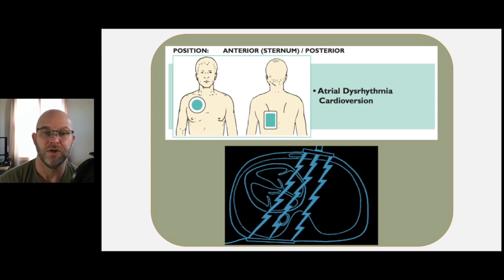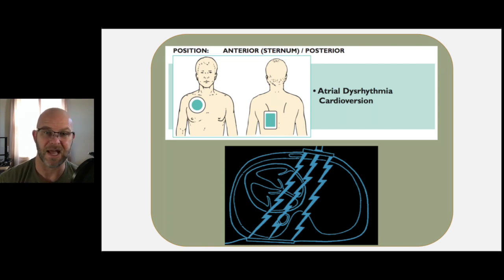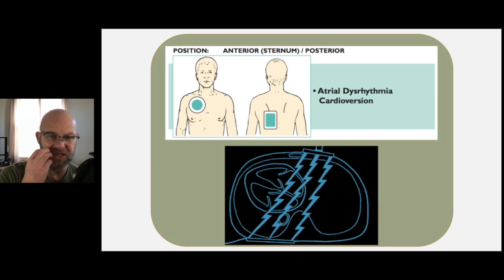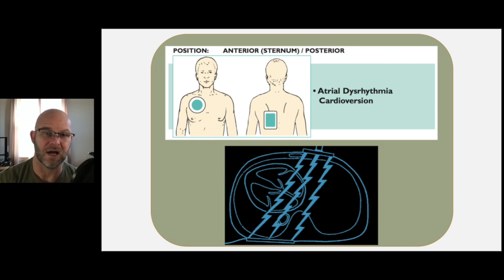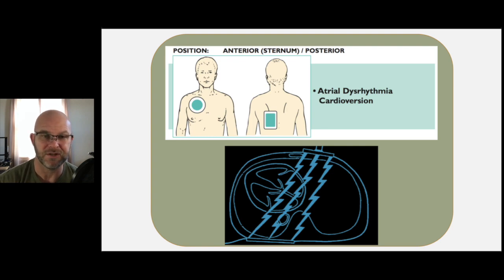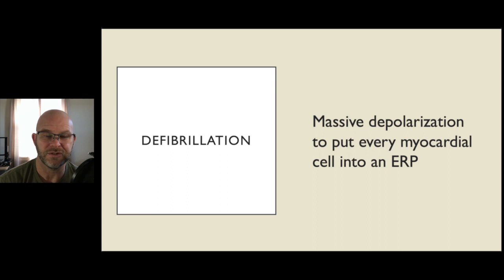Pad placement — all the studies say the best place is anterior-posterior. When you're cardioverting something like A-fib or flutter, you're actually trying to get more of the atria, so they talk about positioning that anterior pad a little more to the right and up to make sure you send energy through the atrium. Pad placement is a huge part — we see patients come to the cath lab with pads slapped on their shoulders or near their kidneys. For this energy to work it has to go through the heart.